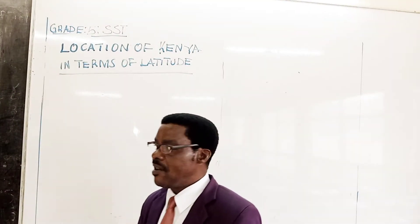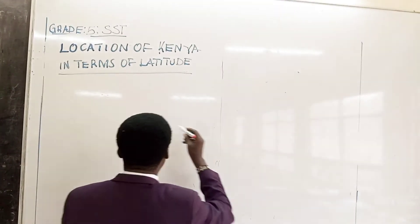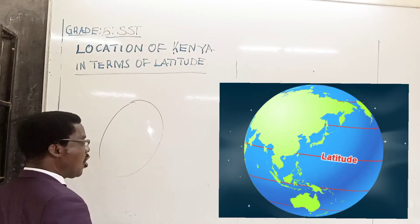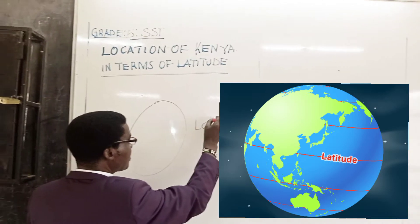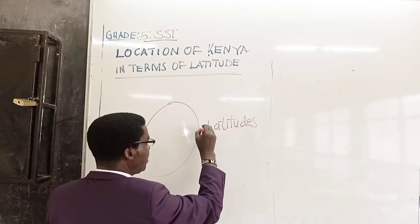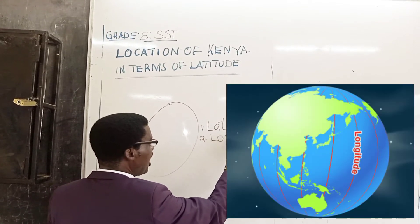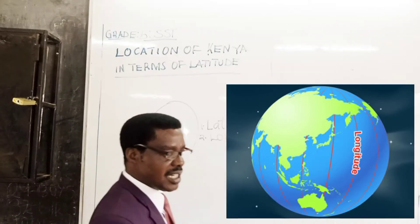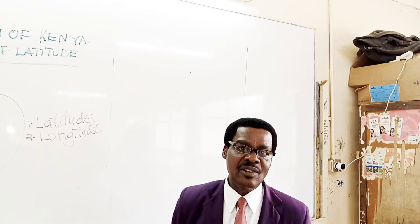Remember, boys and girls, the world looks like a sphere. There are lines — we call them latitudes — and then we have the so-called longitudes. These lines are just imaginary; we simply imagine these lines exist.